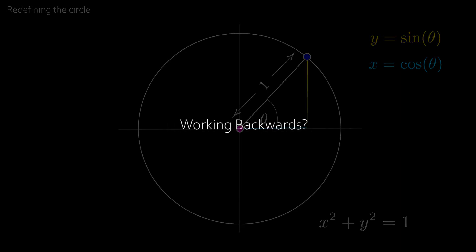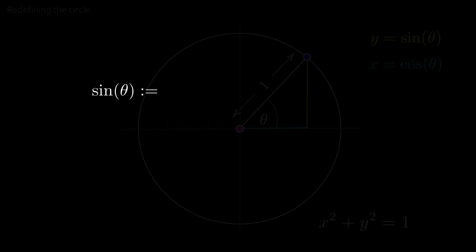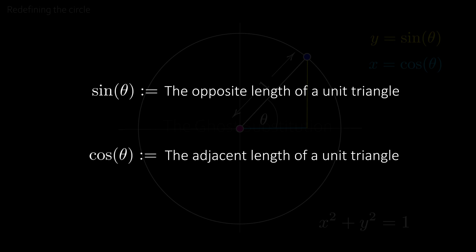But this is actually working backwards, because sine of theta is actually defined as the opposite length of a unit triangle, and cosine of theta is defined as the adjacent length of a unit triangle,